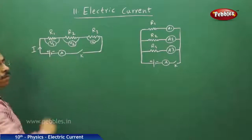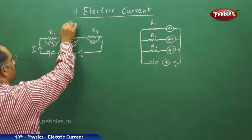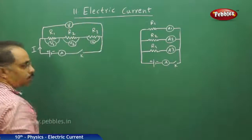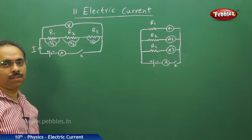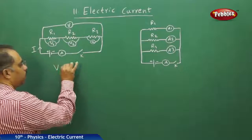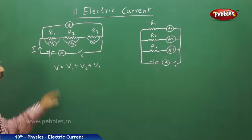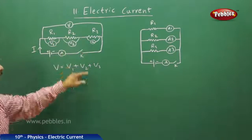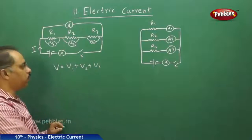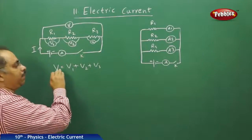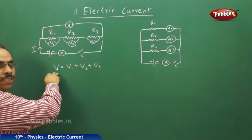Now, because the same current is passing through all resistors but the potential differences are different — if I have a voltmeter which can measure the potential drop across all three resistances connected in series, this V will show the potential difference across all three. You will observe that V is equal to V1 plus V2 plus V3. The potential drop across all three resistances put together equals the sum of the potential drops across each individual resistance.